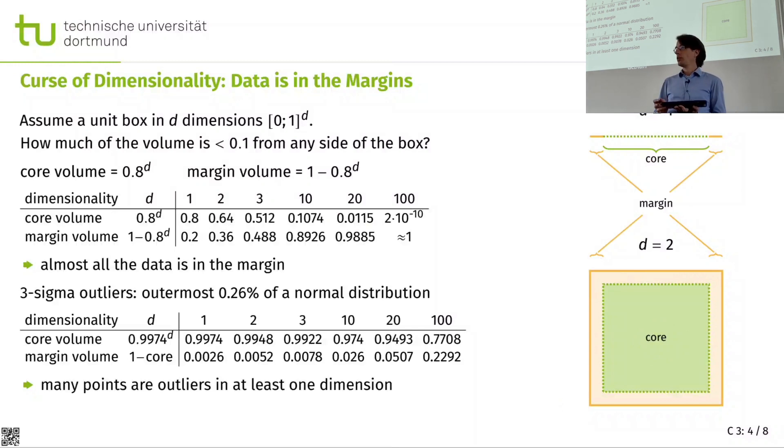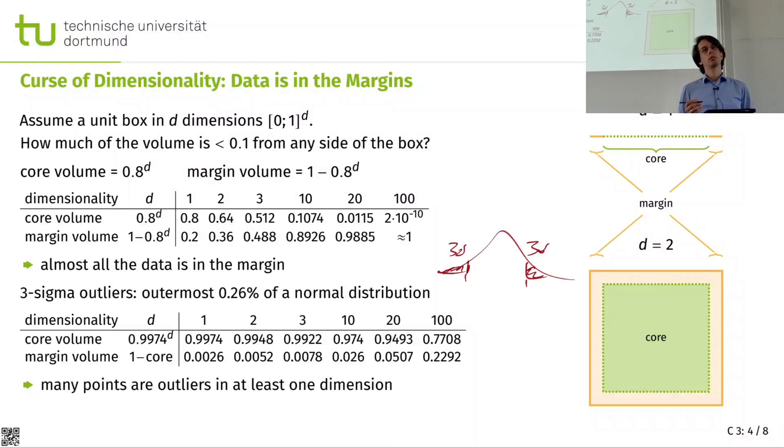Or looking at anomalies. If you had a Gaussian distribution, it would be very common to make a cut off at three standard deviations. And say points out there, if I have a normal distribution, they are considered to be outliers. So someone that is unusually tall, someone unusually small, has unusually large feet, whatever. We know that if the data is normally distributed, 99.74% of the data will be within three standard deviations. But what if I look at more than one dimension at a time? For two dimensions, it's still 99.5, 99.2. But once I'm at 20 attributes, I already have 5% of data that is anomalous in at least one dimension.